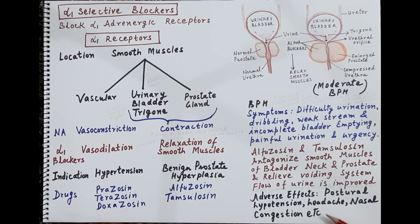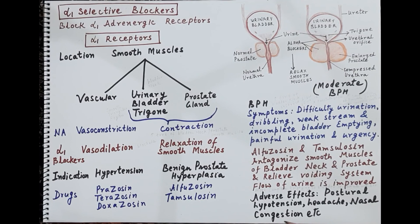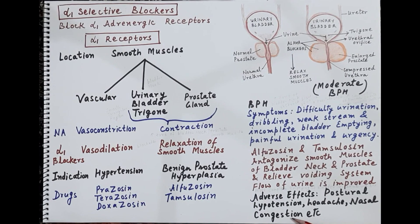Adverse effects of alpha-1 blockers include postural hypotension, headache due to hypotension, and nasal congestion due to dilation of blood vessels in the nose. These are the adverse effects of selective alpha-1 blockers.